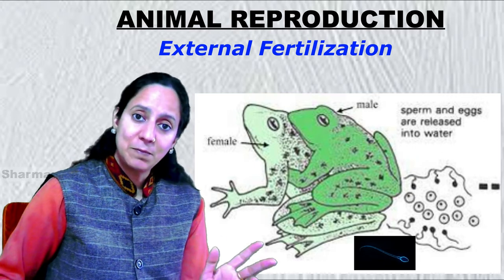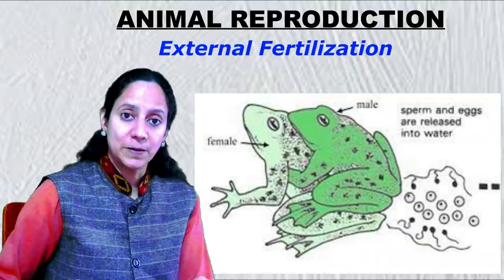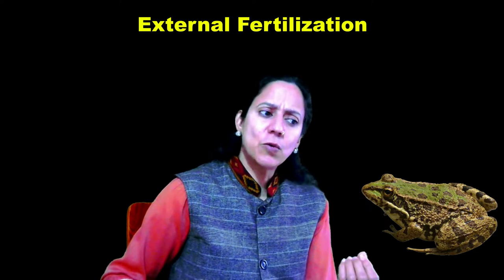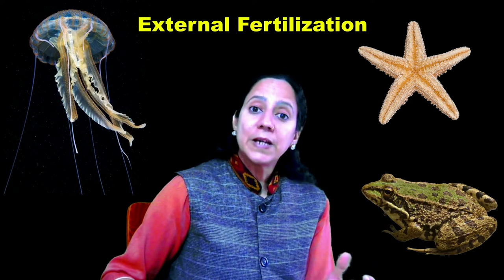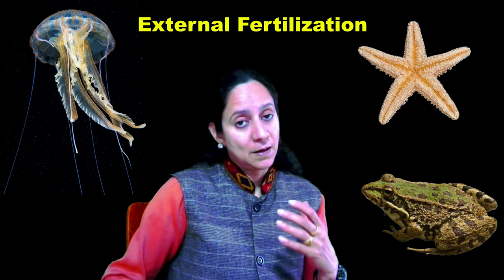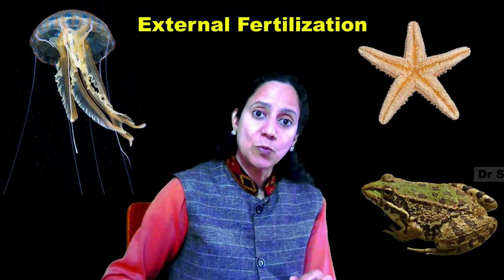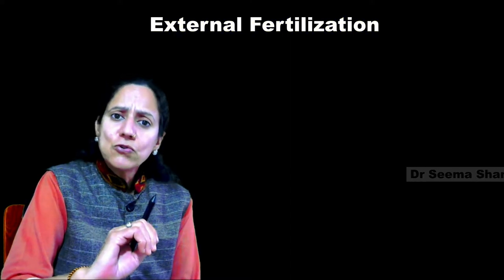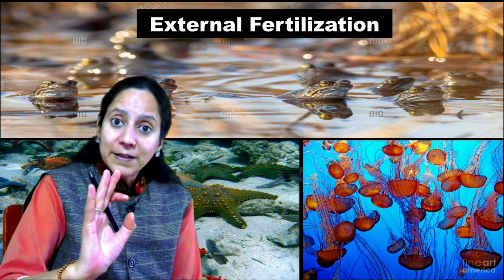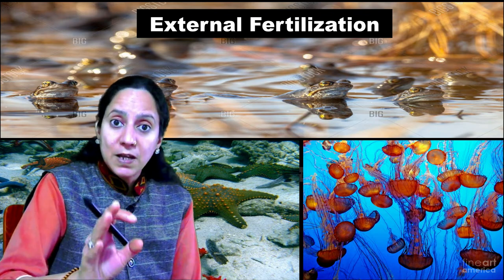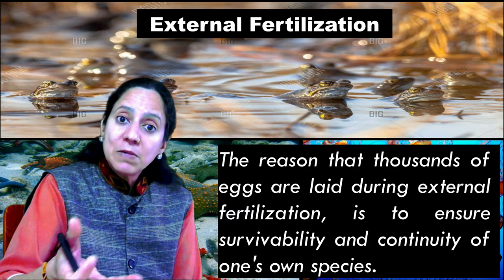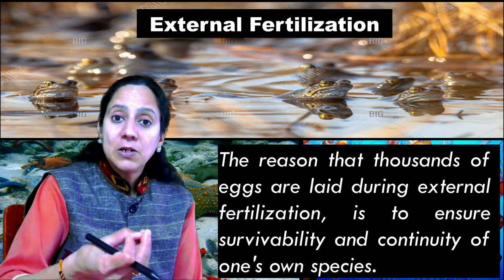Thereafter, the formation of the zygote and development of the tadpole also takes place outside the animal's body. Frog is just one example. There is a long list of other aquatic animals like starfish and jellyfish. They also gather in large groups in slow-moving water, where they lay eggs and sperms together on the surface of the water, and fertilization takes place externally. Many of these eggs will be washed away by water currents, a few may be eaten up by other animals, and a few may not successfully fuse.